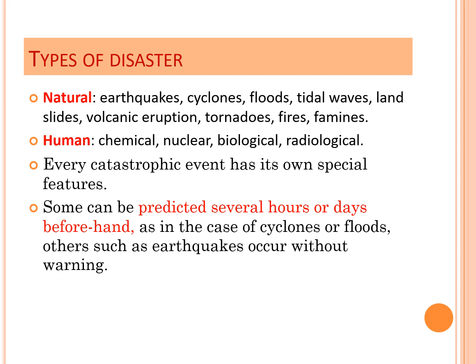Human-induced disasters can be due to chemical, nuclear, biological, and radiological causes. They are mainly driven by rising population, rapid urbanization, and industrialization. Certain zones or high-risk areas are more affected, and environmental degradation and climate change aggravate vulnerabilities to various kinds of disasters, making those areas more susceptible.